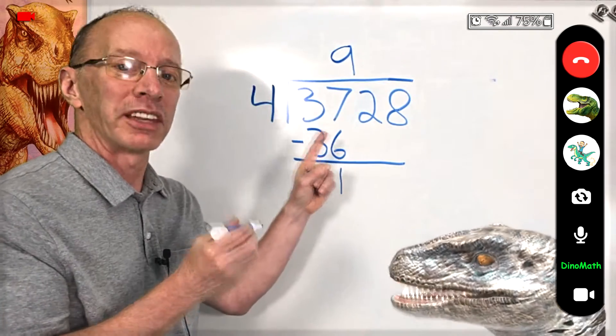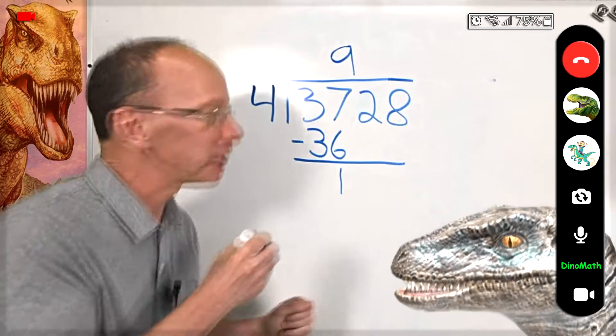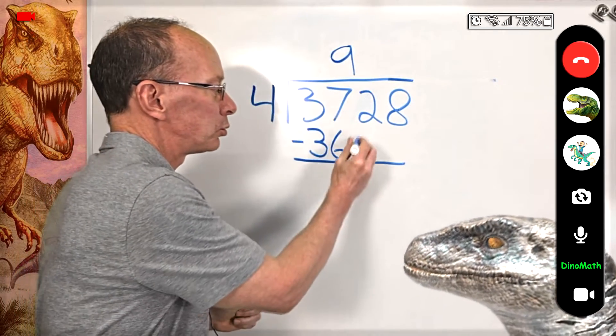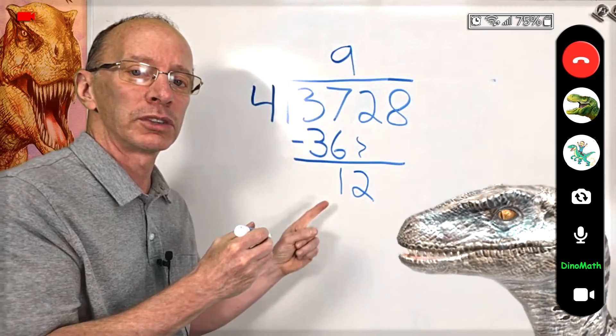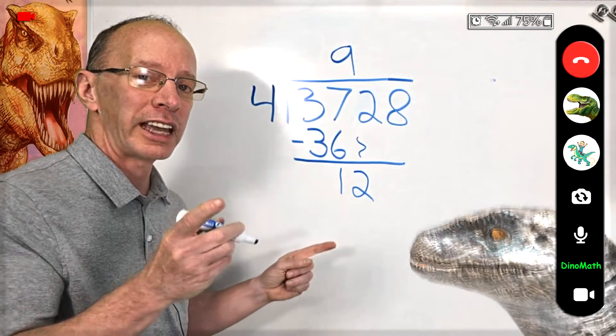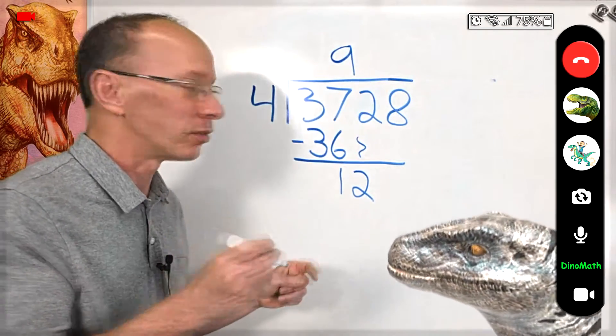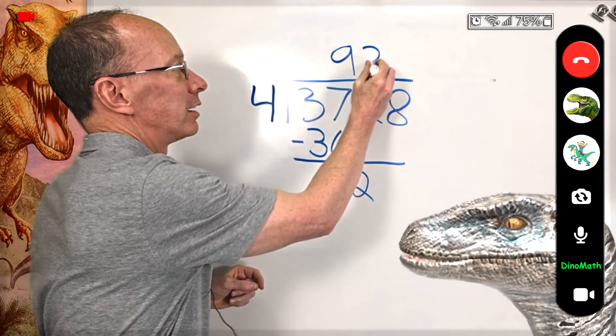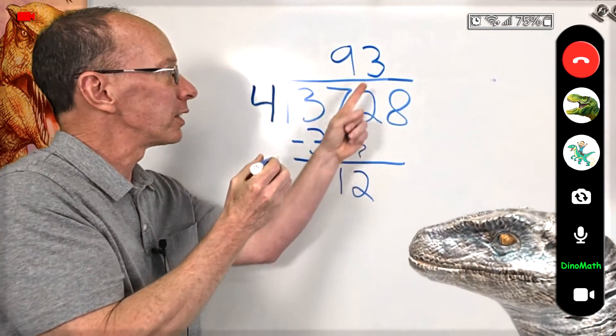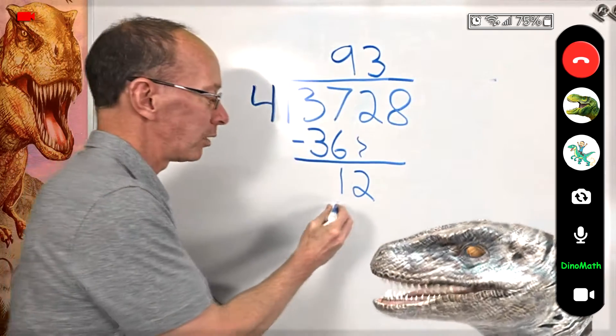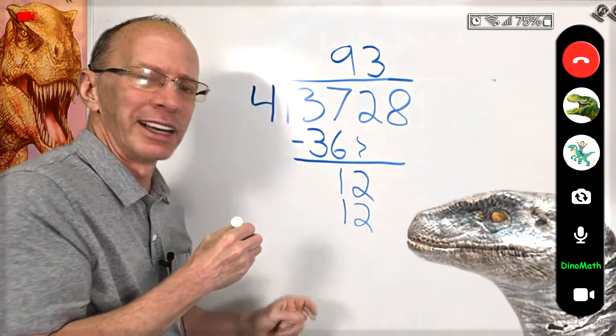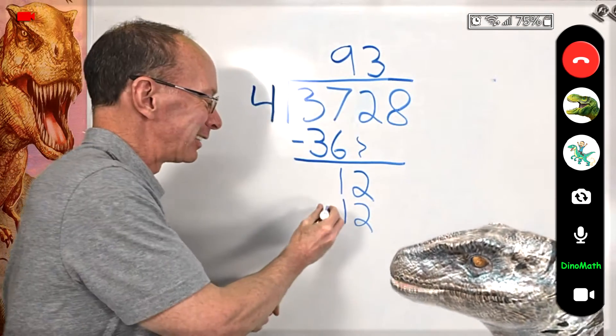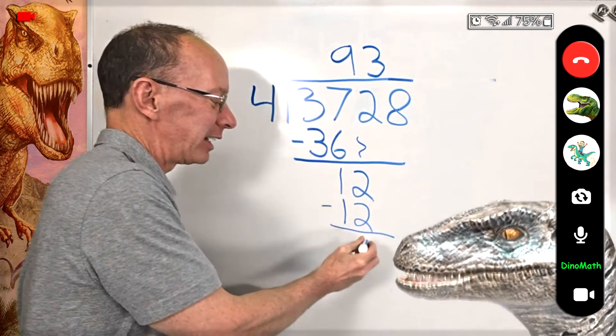Our next step is to drop the next number down. Just drop it down, just like this. Put the 2 right there. And how many times does 4 go into 12? 4 times 2 is 8. 4 times 3, 12. All right. So I put the 3 right here, right above that 2, because that's what I'm working with. 3 times 4 is 12. A little nervous with that raptor there staring at me. And now I just go ahead and subtract. And that is a 0. You can put the 0 there, or you just leave it blank.